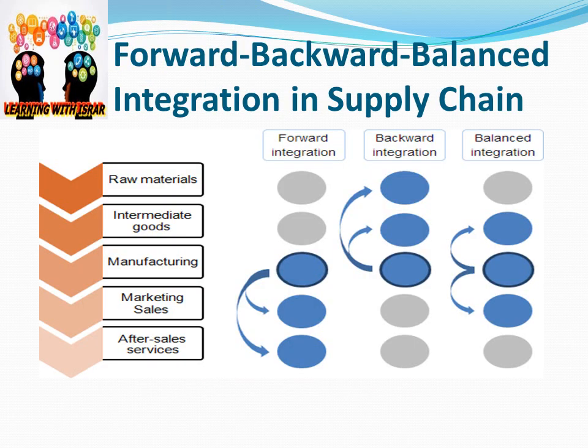Another way of showing integration is forward, backward, or balanced integration. Forward integration means if you are a manufacturer, you also control marketing, sales, and after-sales service. Backward integration means you control raw material or intermediate goods. Balanced integration means you go one step back and one step forward, achieving a balanced integration across the supply chain.